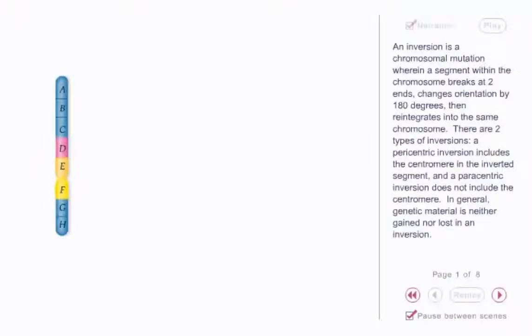An inversion is a chromosomal mutation wherein a segment within the chromosome breaks at two ends, changes orientation by 180 degrees, then reintegrates into the same chromosome. There are two types of inversions.